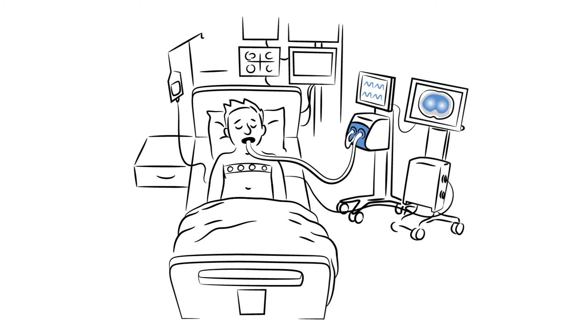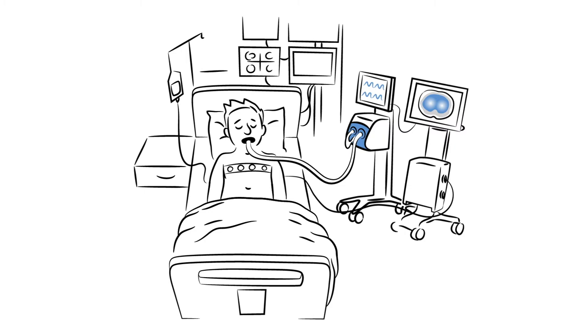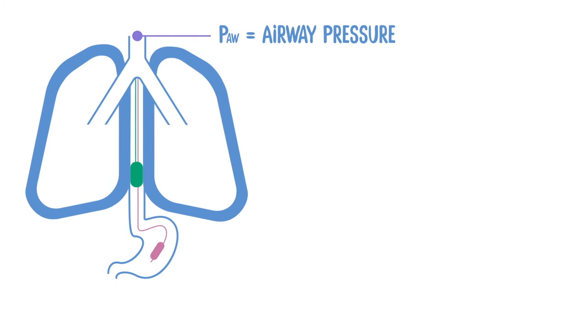To get this information about transpulmonary pressure, two different pressures need to be measured: airway pressure, substituting alveolar pressure and enabling assessment of elastance of the respiratory system.